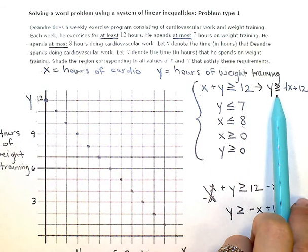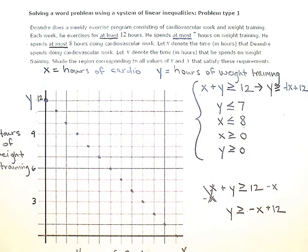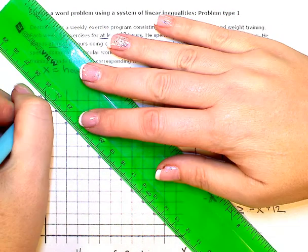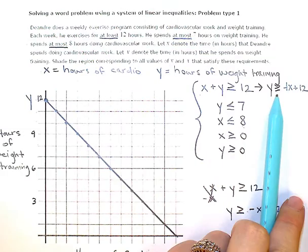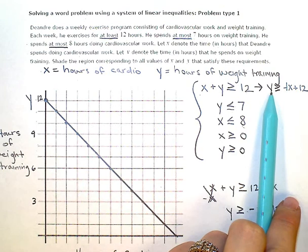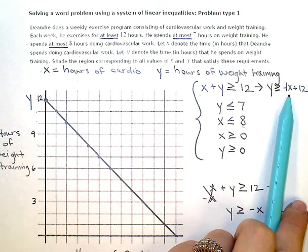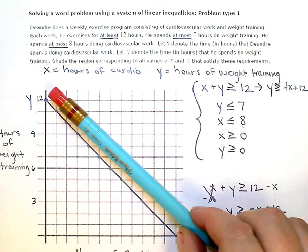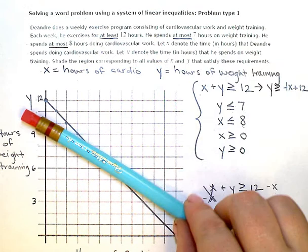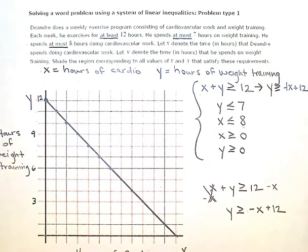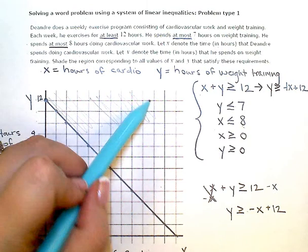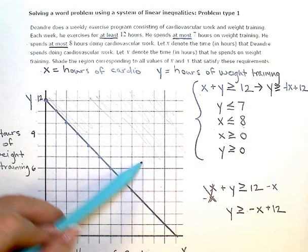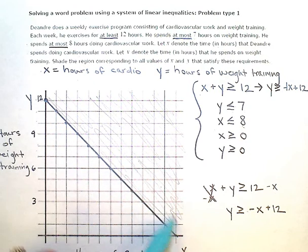Now, because it's greater than or equal to, I'm going to connect up these dots now with a solid line. And I'm interested in the points that are greater than that boundary line. So I want the points that are above, or on top of that boundary line. So I'm going to really lightly here, I'm not going to put in really dark shading because I'm going to end up erasing some of this in a minute. So I'm just going to put in some really light shading right there. So I have my first inequality graph.